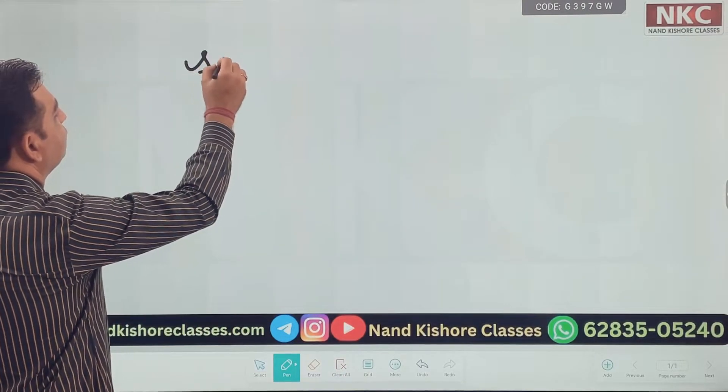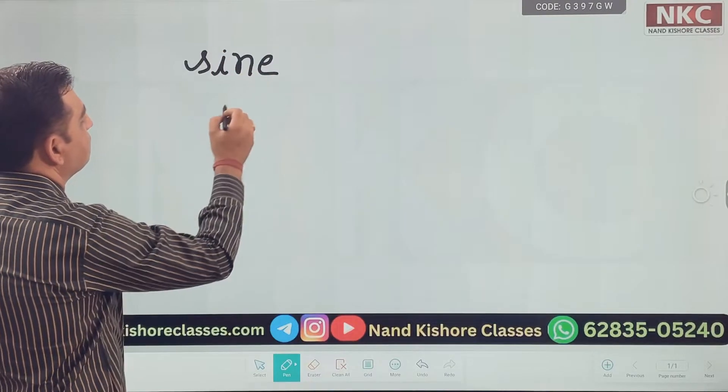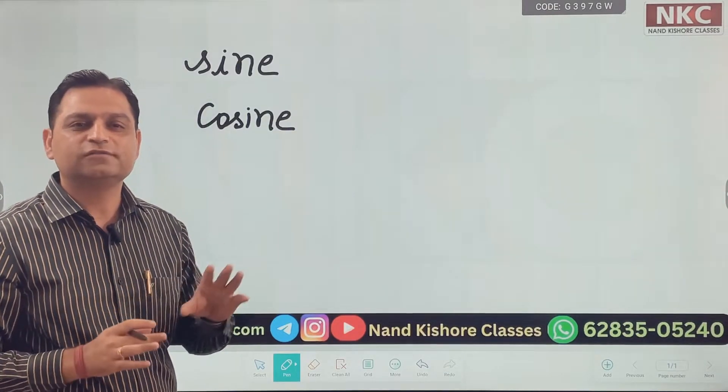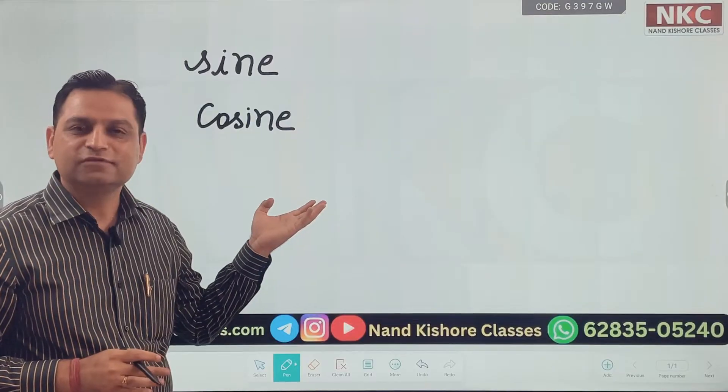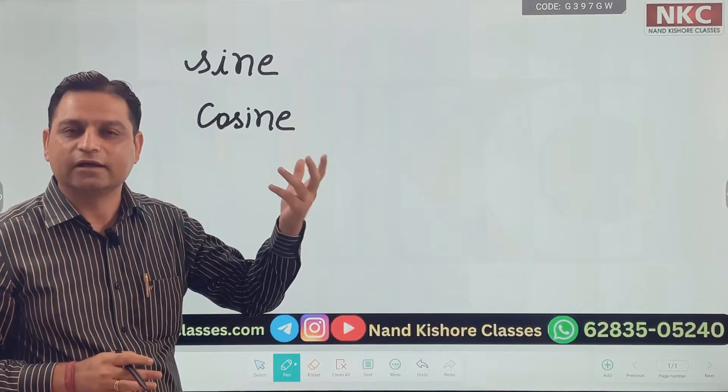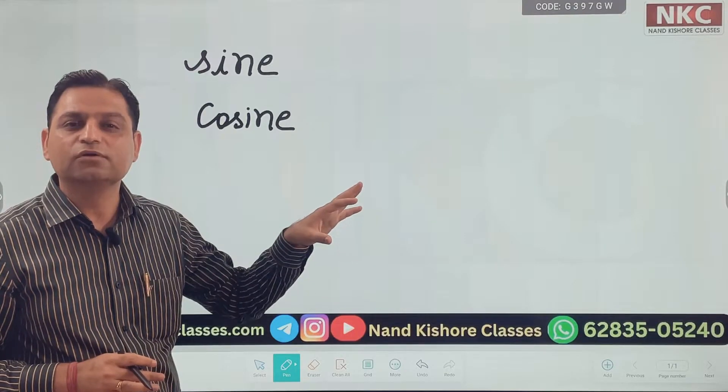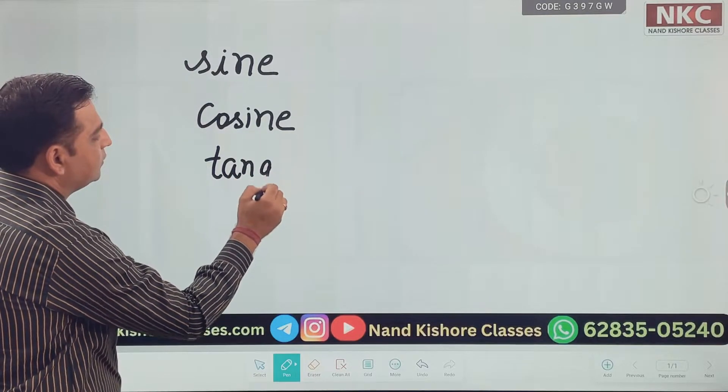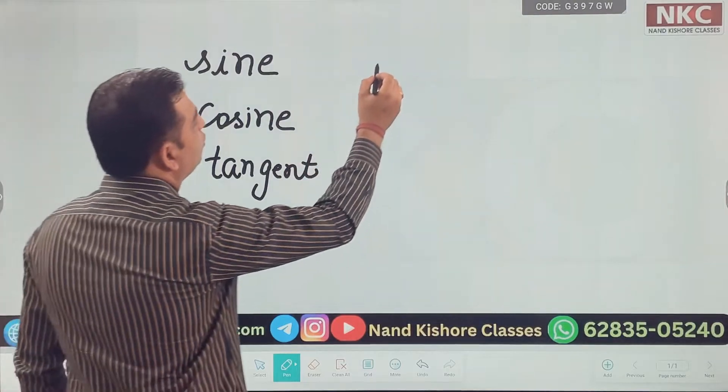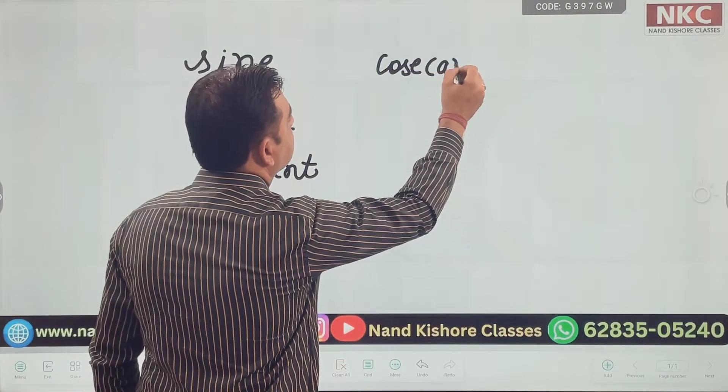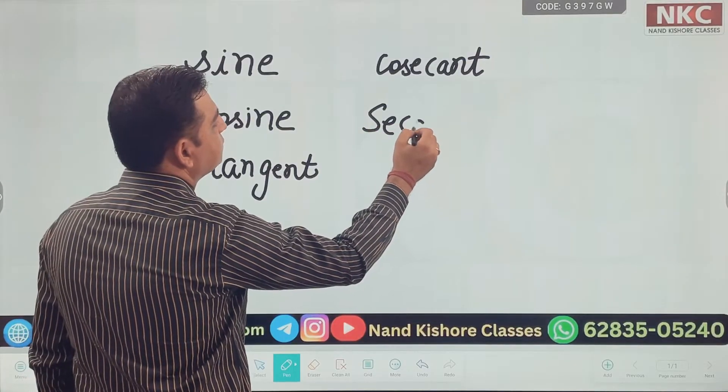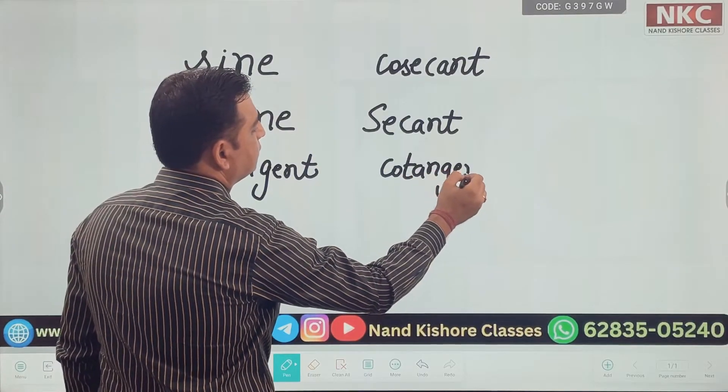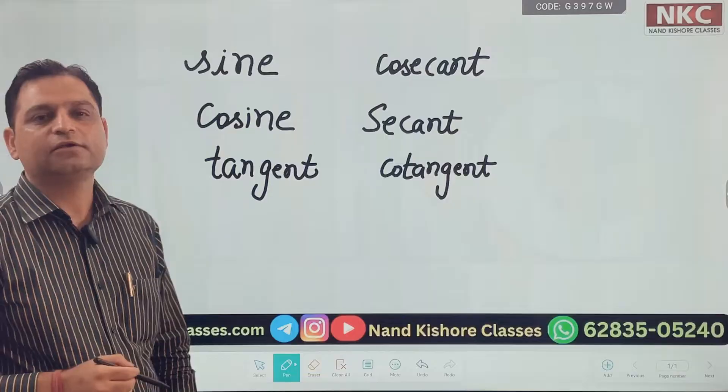Those all names are first name is sine. Then it is cosine. I am writing full names because usually students, they rarely see the full names. They usually call it sine, cos, tan like that. That is why I am specifically writing full names on the board so that you can have a look over them. Sine, cosine, tangent, cosecant. You can note down these names. Then secant and then cotangent. These are the names of trigonometric ratios.